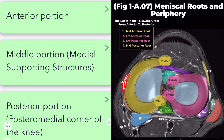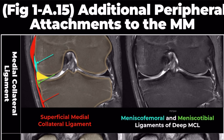The middle third is composed of the width of these longitudinal fibers of the medial collateral ligament. The superficial medial collateral ligament is highlighted in red, the meniscofemoral ligament is aqua, and the meniscotibial ligament is green.